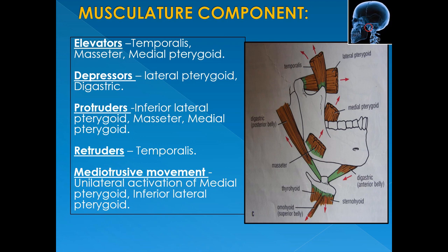The masticatory muscles — masseter, temporalis, lateral pterygoid, and medial pterygoid — along with accessory muscles, contract and relax in harmony for proper jaw function. Elevators are temporalis, masseter, and medial pterygoid. Depressors are lateral pterygoid and digastric. Protruders are inferior lateral pterygoid, masseter, and medial pterygoid. The posterior fibers of temporalis help retract the protruded mandible and aid in side-to-side grinding. Mediotrusive movement involves unilateral activation of medial pterygoid with inferior lateral pterygoid — for example, right medial pterygoid with left lateral pterygoid turns the chin to the left as part of grinding movements.